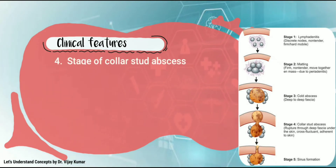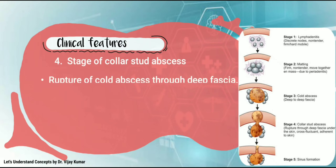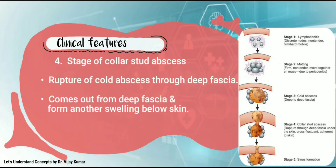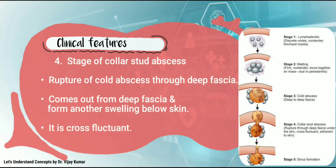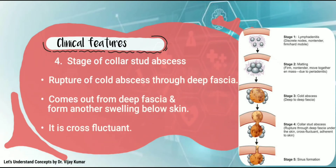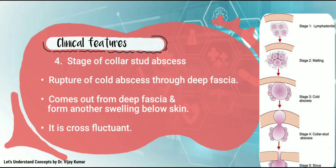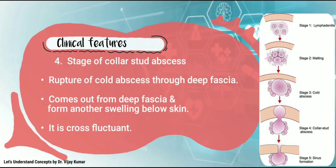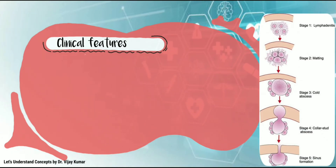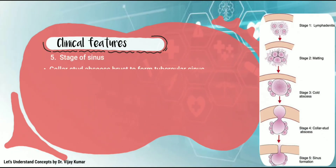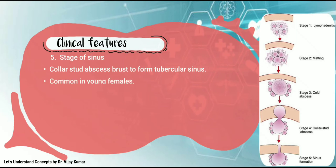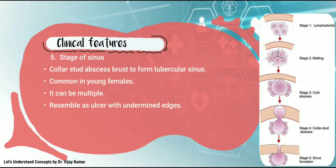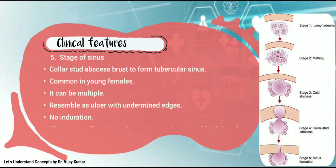Fourth stage: collar stud abscess. This occurs due to rupture of the cold abscess through the deep fascia. It comes out from the deep fascia and forms another swelling below the skin, which is cross-fluctuant. Fifth stage: sinus. The collar stud abscess bursts to form a tubercular sinus.